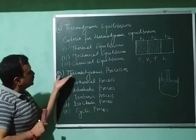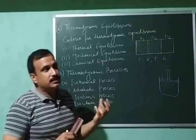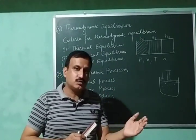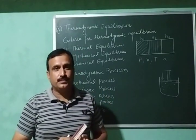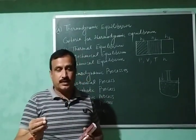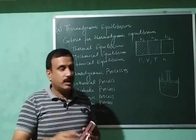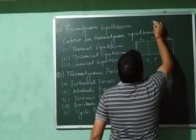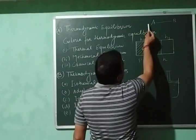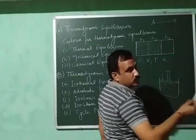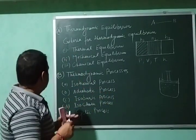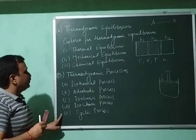Now we will discuss thermodynamic processes. A process is said to have occurred if a system changes from one state to another — that is, from an initial state to a final state. The state of a system is defined by its state variables. If the system changes from state A to state B, its macroscopic properties change: at the initial state we have P1, V1, T1, and at the final state we have P2, V2, T2. We have five types of thermodynamic processes.